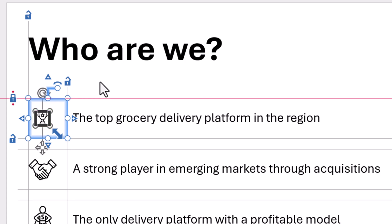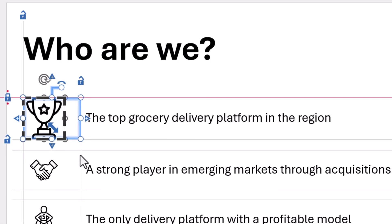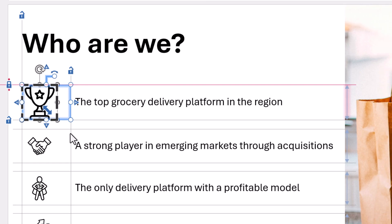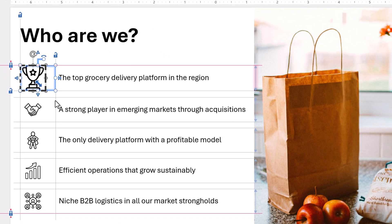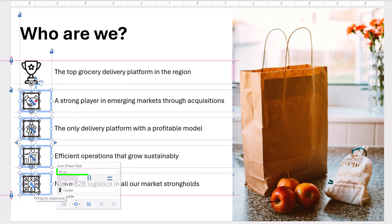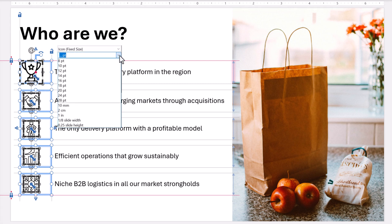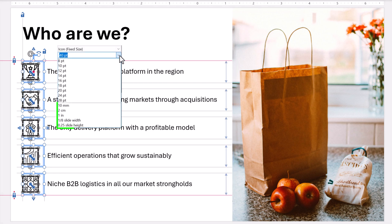To resize the icon with the mouse, use the blue resize arrow. To expand the icon, click and drag the arrow to the bottom right. To resize an icon with more precision, use the mini toolbar. Let's say you want to make sure the trophy icon is exactly the same size as the other icons. Selecting the other icons shows in the mini toolbar that their height is 40 points, so let's make the trophy icon 40 points as well. In the size menu, you can select a size or type a custom size — in this case 40 points. You can also set the icon height in millimeters, centimeters, inches, or as a proportion of the slide width or height.